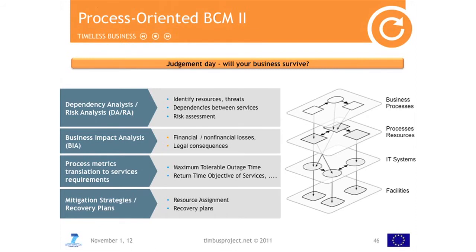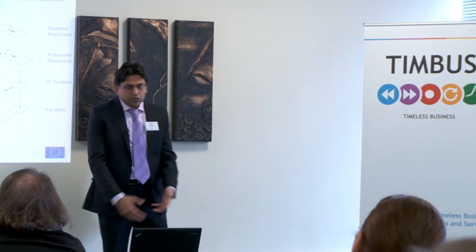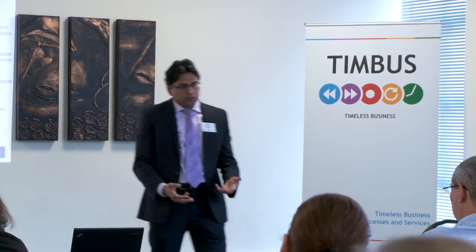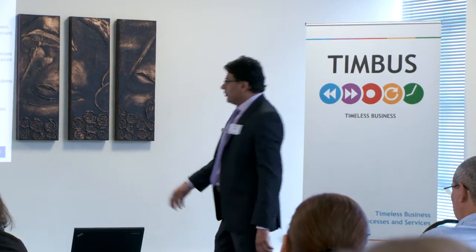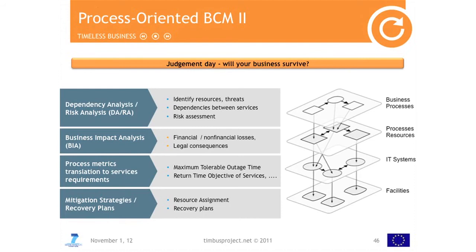The idea in an abstract way is that you have a business process with detailed business process information and process activities. Then you have process resources — people allocated to different activities. For example, an accountant is working on some particular step. Then all the IT resources they are touching, and also facility-level resources like electricity and air conditioning. Electricity fails, air conditioning will stop, heat up the data center, and eventually the data center will stop. If electricity becomes unavailable, the impact might not come immediately — it might take a couple of hours before the data center is heated and stops, and then it will affect the process. So we look into availability times of these activities as well.